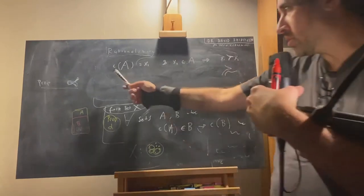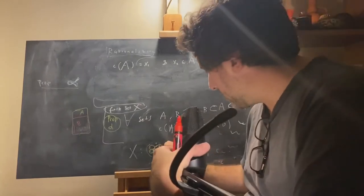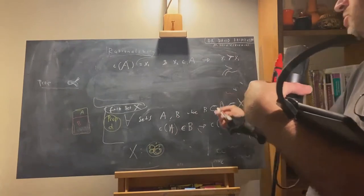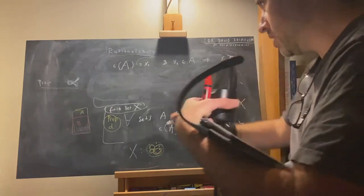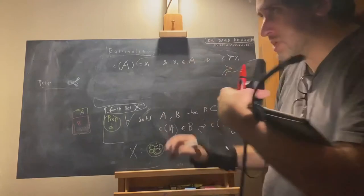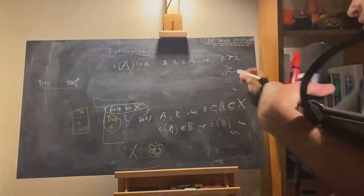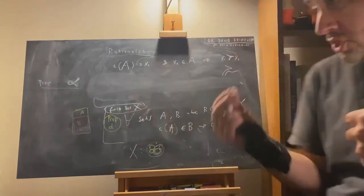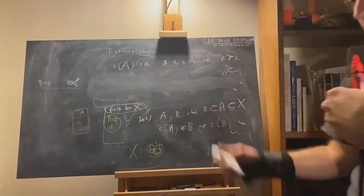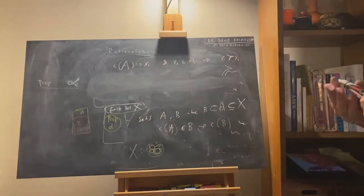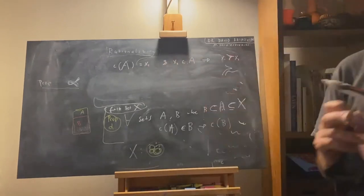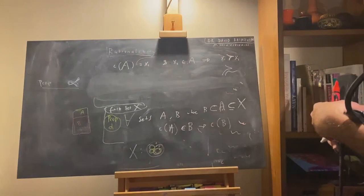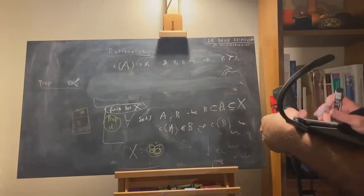A choice function can be rationalized means that there's some preference relation such that this will always be the case: whenever that choice function is applied to some subset A within the big set X, whenever it chooses X1 but X2 was also in that choice set, it must be that X1 is strictly preferred to X2 by the preference relation that rationalizes this choice function. We have examples of both rationalizable and non-rationalizable choice functions.